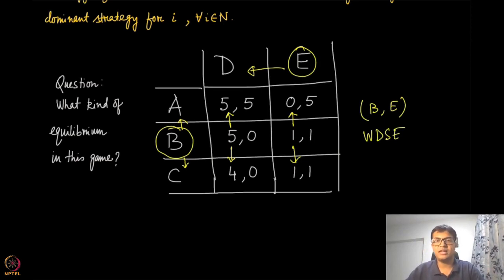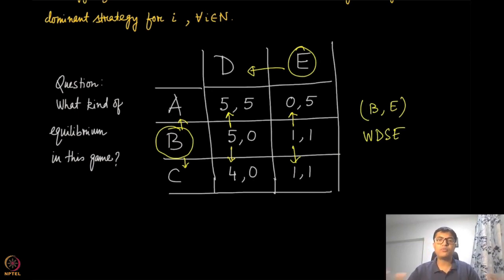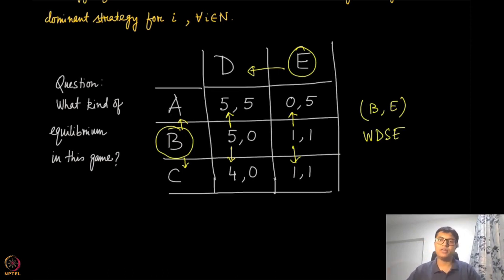You can change the numbers slightly to make it a strictly dominant strategy equilibrium. But this example is meant to illustrate what it means to have a weakly dominant strategy equilibrium. We can predict — since game theory is about predicting outcomes — that (B, E) is the most probable outcome of this game.